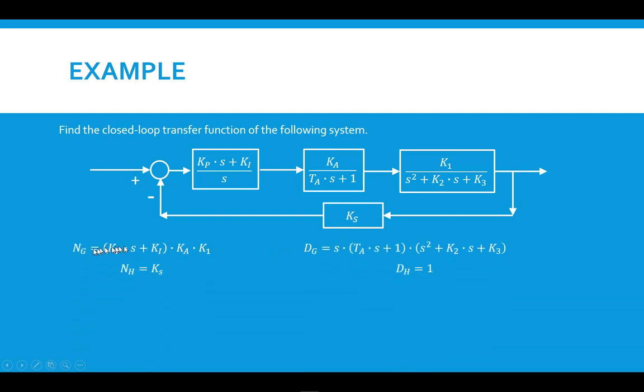So what we're going to do is write out the expressions for NG, NH, DG, DH, which I've done here. And all I've done for NG, it's simply the product of these three numerators here. The denominator is simply the product of these three denominators here. The numerator of H is KS. There's no denominator here, so the denominator of H is 1.